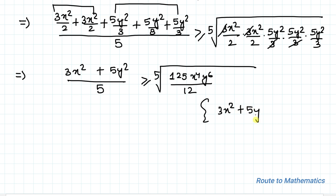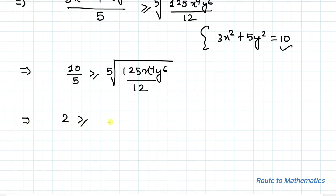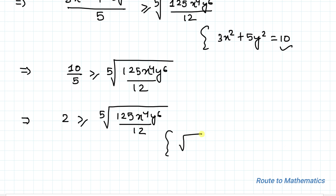From equation 1, we have 3x² + 5y² = 10. Substituting this value, we get 10/5 ≥ ⁵√(125x⁴y⁶ / 12), which simplifies to 2 ≥ ⁵√(125x⁴y⁶ / 12). Using the exponential rule that if ⁿ√x = a then x = aⁿ, we can raise both sides to the 5th power.